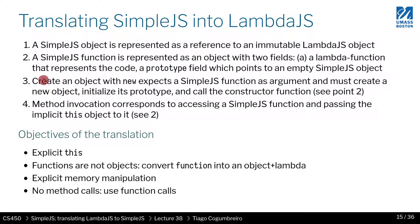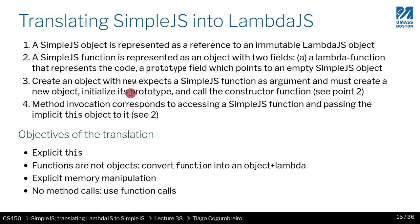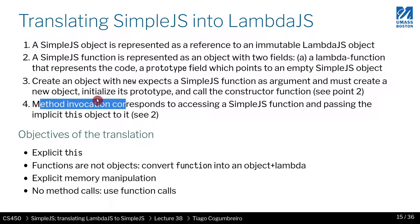When creating an object, we'll have to initialize it. The "new" operation takes a function representation, reads the code from it, reads the prototype from it, and creates a new object — initializing the prototype field. Then it allocates the new object and passes it to the constructor, which is the code field. This will be clear in the next few slides.